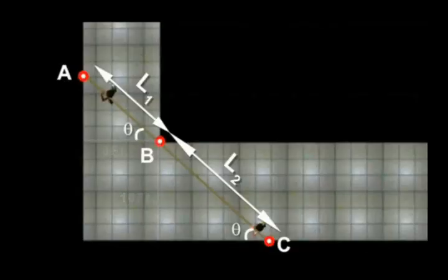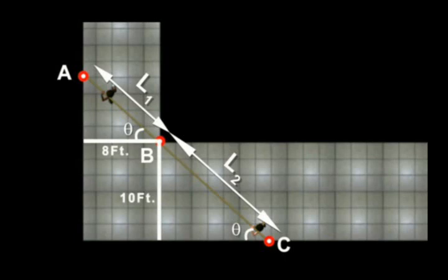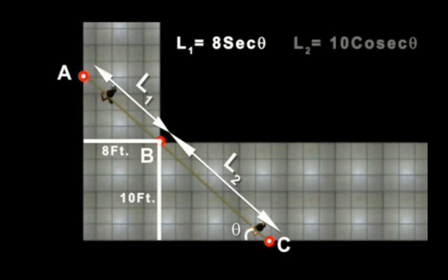The constraints for this problem are the bits of the hallway. We will use these to get an equation for L in terms of theta. So using basic right triangle trigonometry, we can see that L is equal to 8 sec θ plus 10 cosec θ.